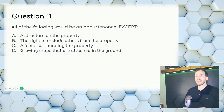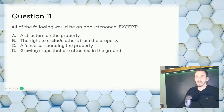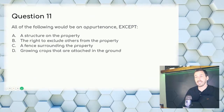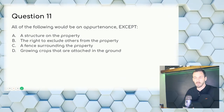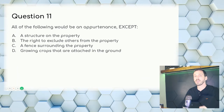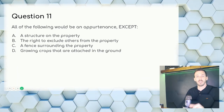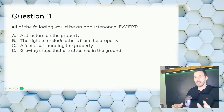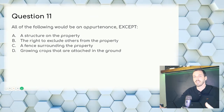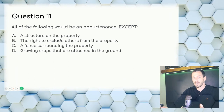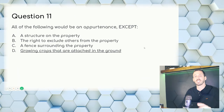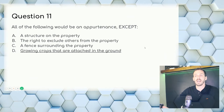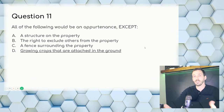Question 11: All of the following would be an appurtenance except — appurtenance means things that run with the land. A through C are pretty obvious. D is the answer because of the term emblements — the right to crops that were the fruit of one's labor. If you spent the time farming, you get that yield. Growing crops attached in the ground are considered emblements and do not automatically run with the land.